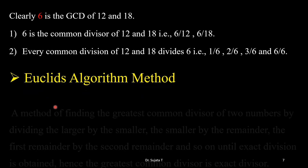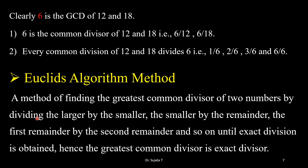Next comes Euclid's algorithm method. To find the greatest common divisor of two numbers, divide the larger by the smaller. Whatever remainder you get, use that remainder to divide the smaller number. Then divide the first remainder by the second remainder, and so on, until you get an exact division — that is, a zero remainder. The last non-zero remainder is the greatest common divisor.